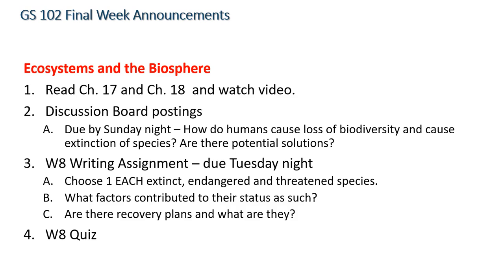For example, why is a bald eagle on the endangered species list? What contributed to eagles ending up on the endangered species list? Was it DDT, the use of a pesticide in the environment? Was it something else — loss of habitat? There are lots of different things that contribute to their status, so look those up. You also need to look to see if there are any recovery plans for these species — are there ways to bring them back into their ecosystems and help them survive so they can become part of the ecosystem again? And if there are recovery plans, then what are they?